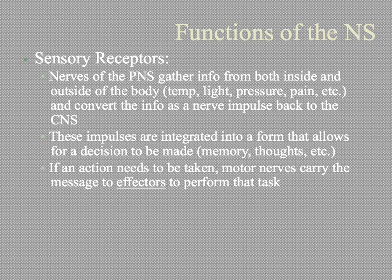The jobs of the nervous system: sensory receptors function to detect changes using your senses — it might be light, hearing, taste, smell, or something like pressure or pain. Then they take that information and pass it back to the brain in the form of a nerve impulse. Your brain doesn't actually feel pain when you slam your finger in a door; rather, the finger sends a message to the brain telling you that it hurts, and then your brain processes that.